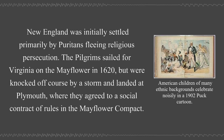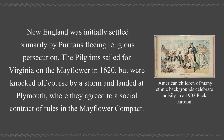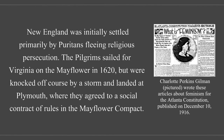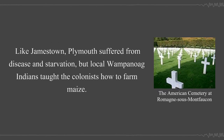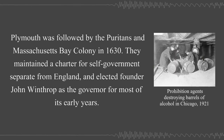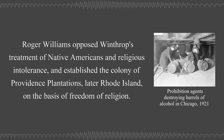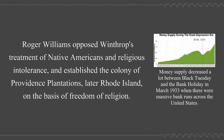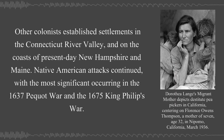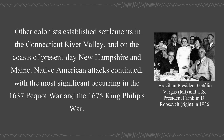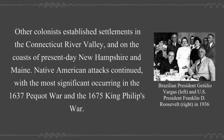New England was initially settled primarily by Puritans fleeing religious persecution. The Pilgrims sailed for Virginia on the Mayflower in 1620, but were knocked off course by a storm and landed at Plymouth, where they agreed to a social contract of rules in the Mayflower Compact. Like Jamestown, Plymouth suffered from disease and starvation, but local Wampanoag Indians taught the colonists how to farm maize. Plymouth was followed by the Puritans in Massachusetts Bay Colony in 1630. They maintained a charter for self-government separate from England and elected founder John Winthrop as the governor for most of its early years. Roger Williams opposed Winthrop's treatment of Native Americans and religious intolerance and established the colony of Providence Plantations, later Rhode Island, on the basis of freedom of religion. Other colonists established settlements in the Connecticut River Valley and on the coasts of present-day New Hampshire and Maine. Native American attacks continued with the most significant occurring in the 1637 Pequot War and the 1675 King Philip's War.